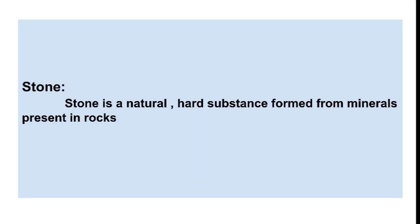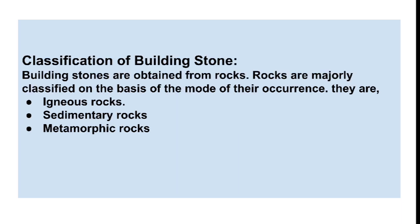Stone is a natural hard substance formed from minerals present in rock. Generally, the difference between rock and stone is almost the same. When a rock is cut into pieces, it becomes stone. Now let us classify the rocks based on their mode of occurrence.